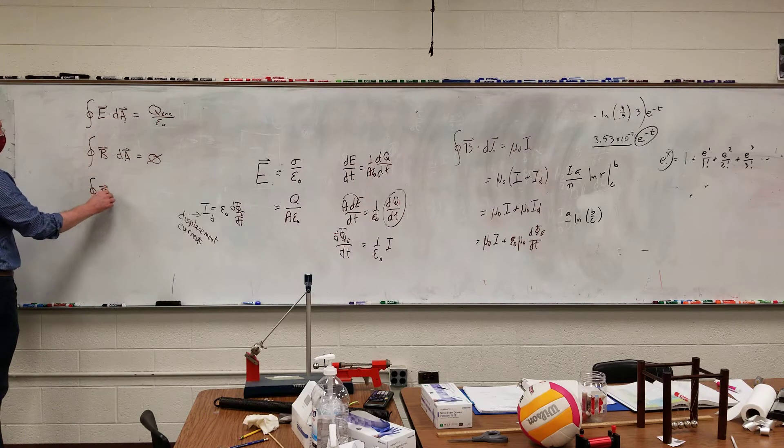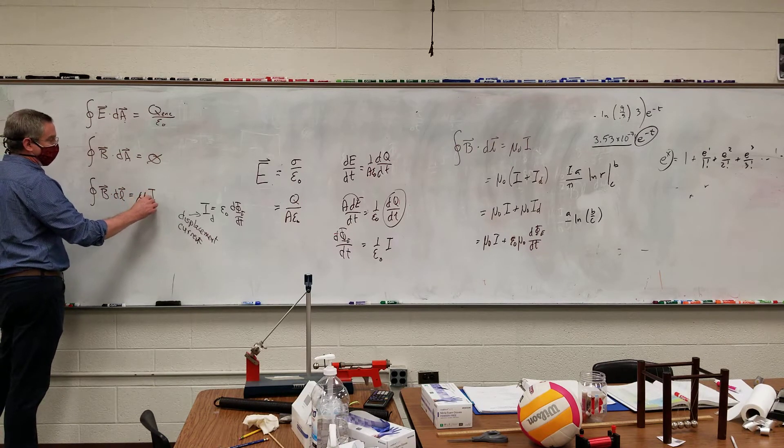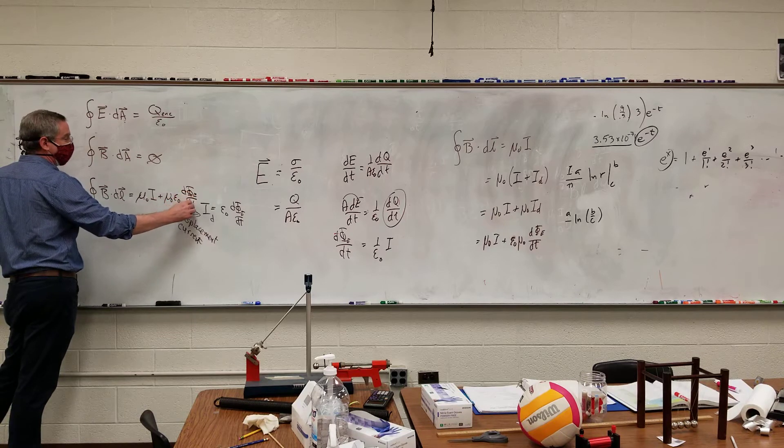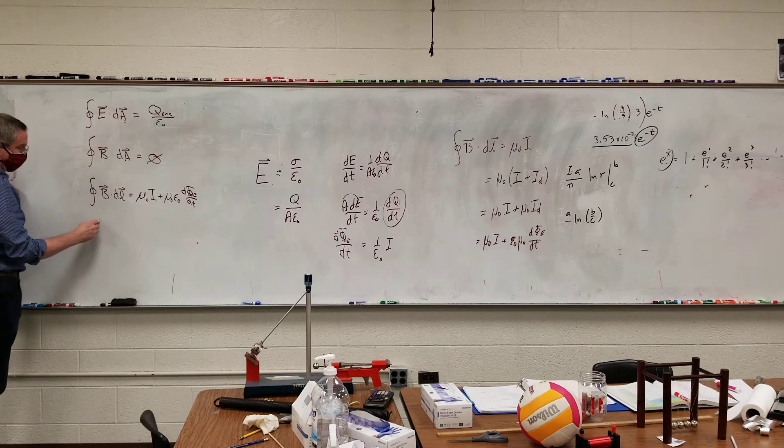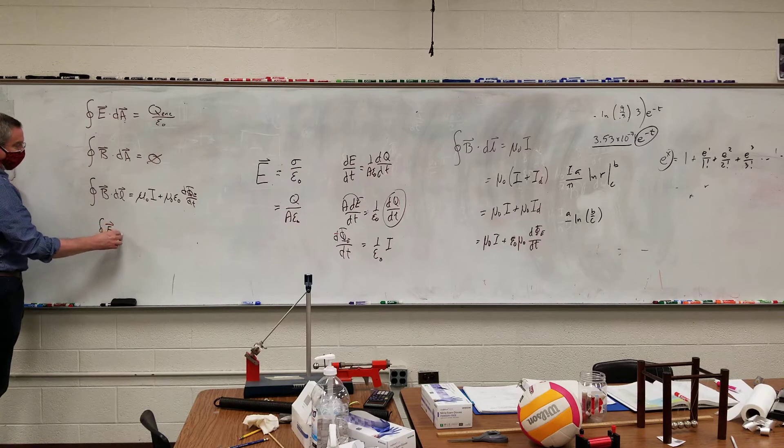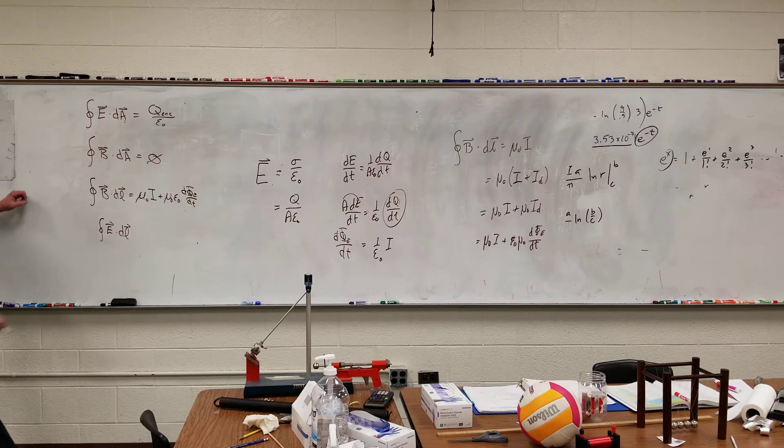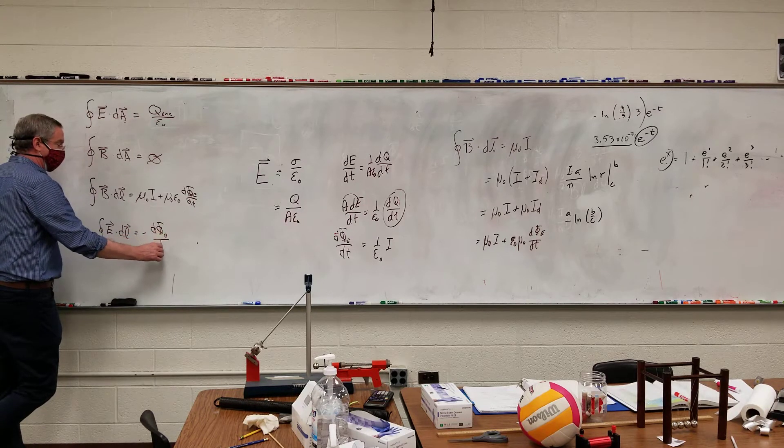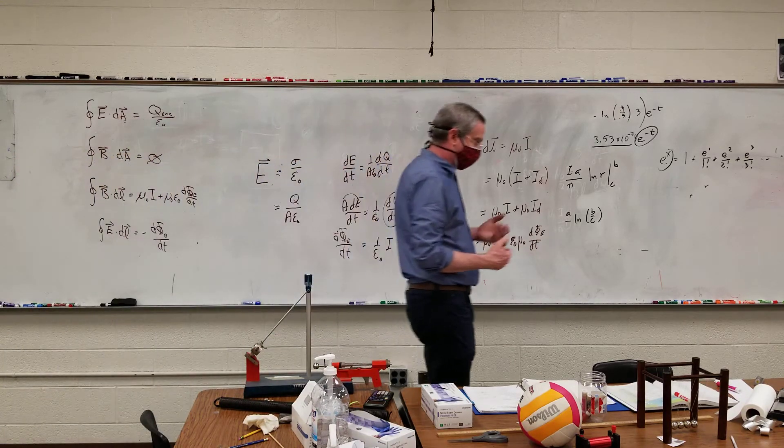The magnetic flux through an enclosed surface is equal to zero. The magnetic field, basically a line integral of a magnetic field is equal to mu-naught times I plus mu-naught epsilon naught d phi E dt. And this is the electric field around the closed loop - the induced EMF is equal to negative d phi B dt.